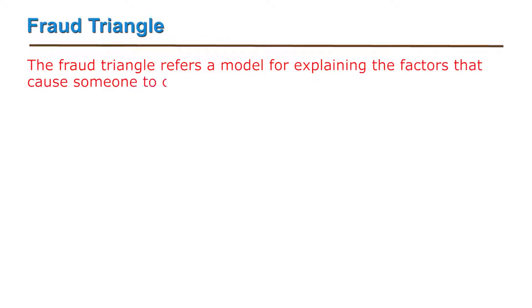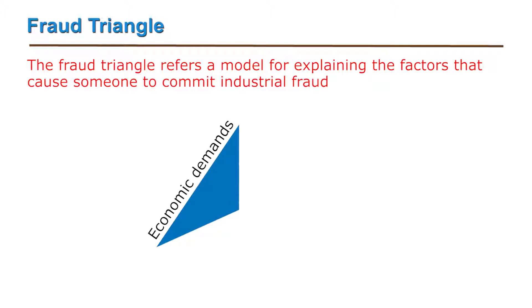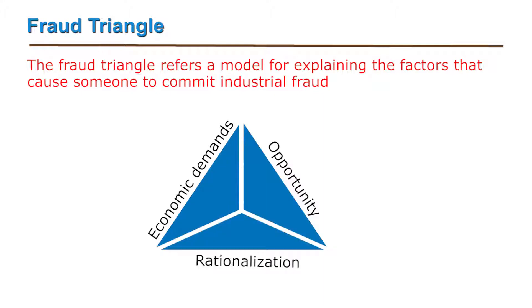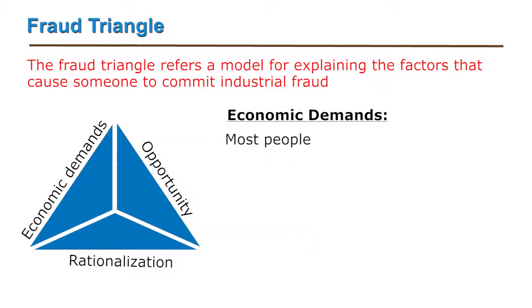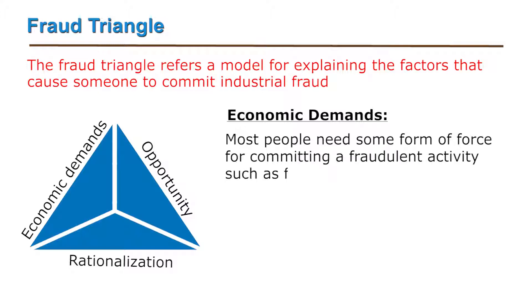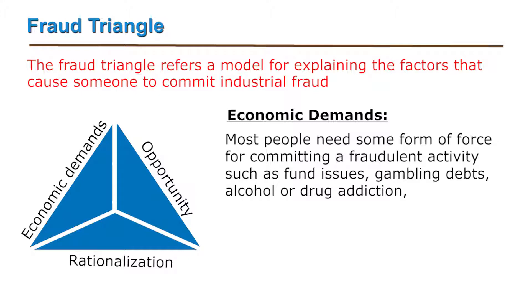This helps us understand why fraud is happening. The fraud triangle refers to the model for explaining the factors that cause someone to commit an industrial fraud. It consists of three elements which jointly lead to fraudulent behavior: economic demands, opportunity, and rationalization. Most people need some form of force for committing a fraudulent activity — for example, it may be a fund issue, a gambling debt, or alcohol or drug addiction, overwhelming remedial payments, etc. So there is an economic demand here.